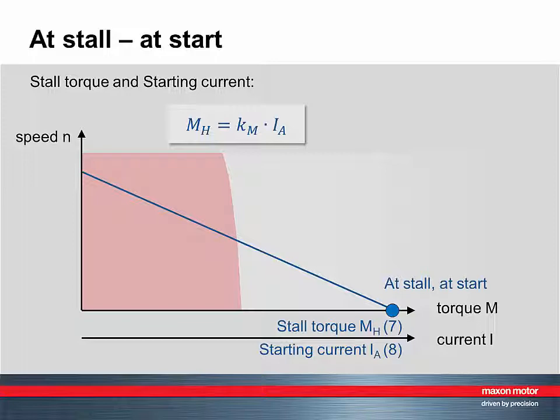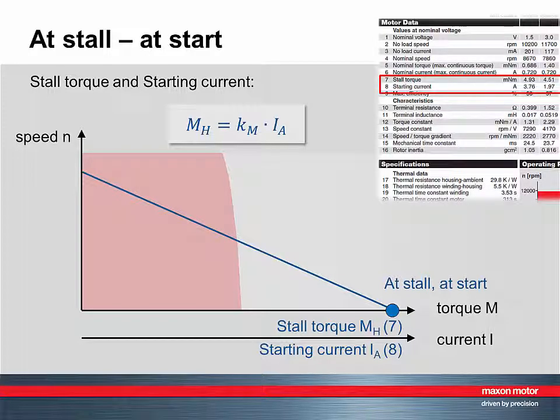Starting current and starting torque. Stall torque and starting current can be found in lines 7 and 8 and are related by the torque constant.